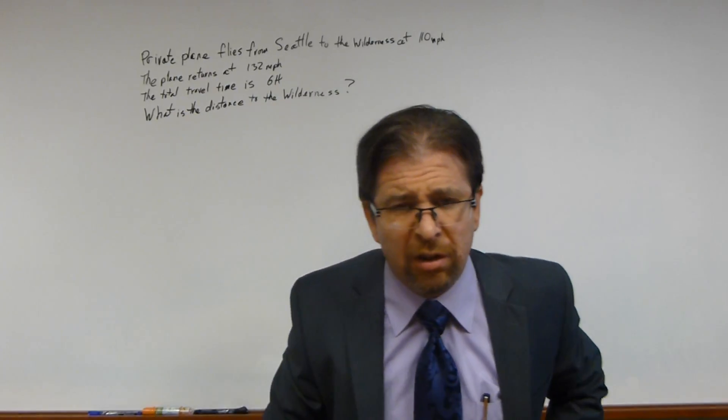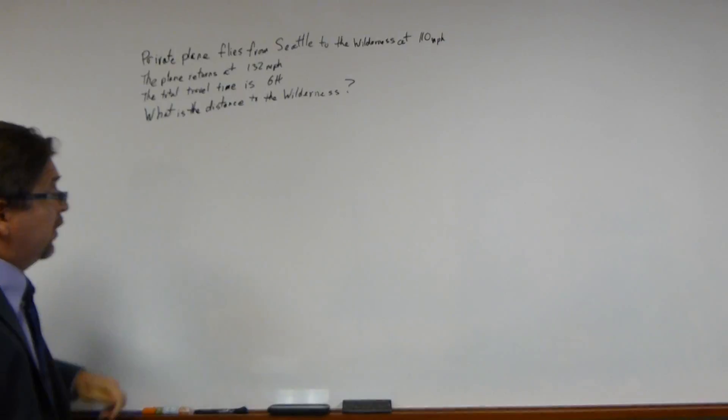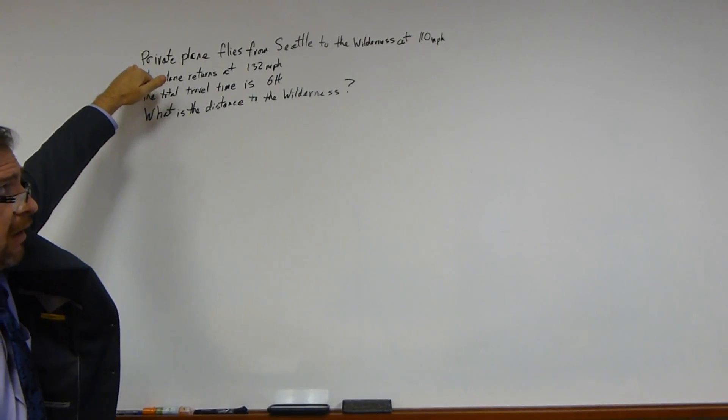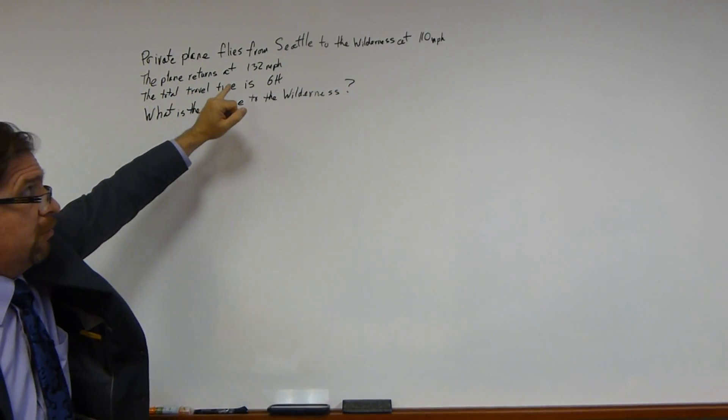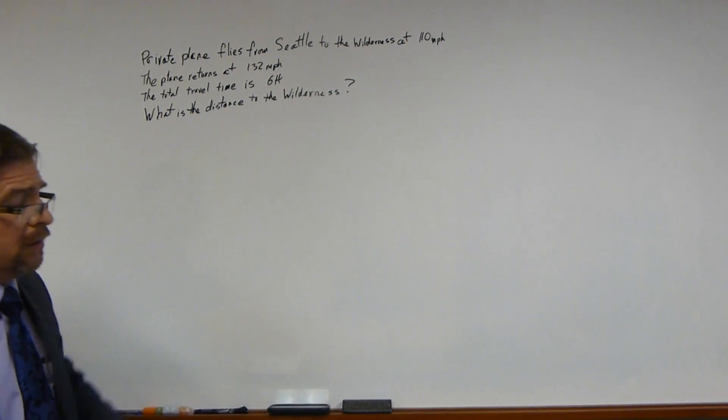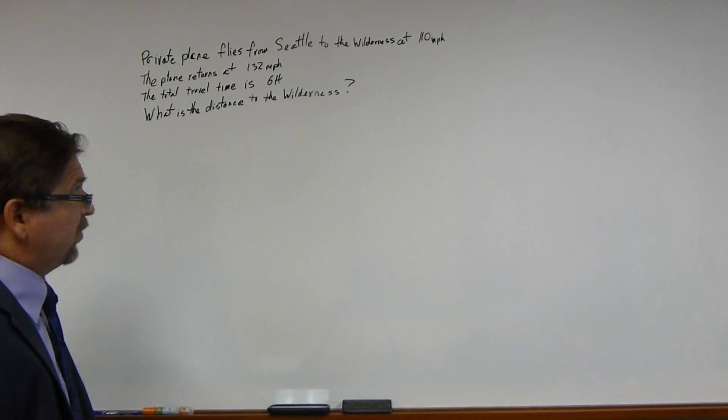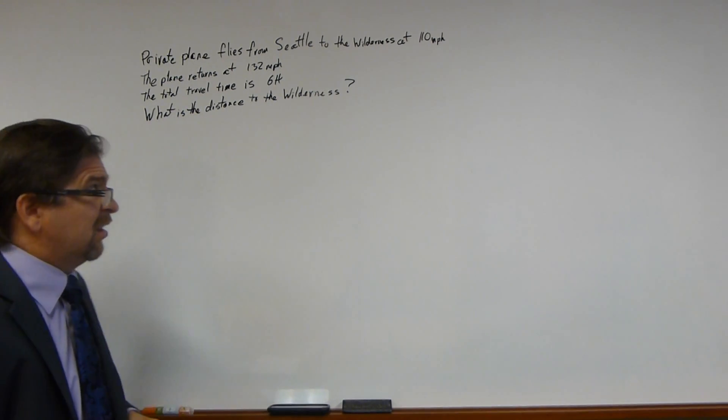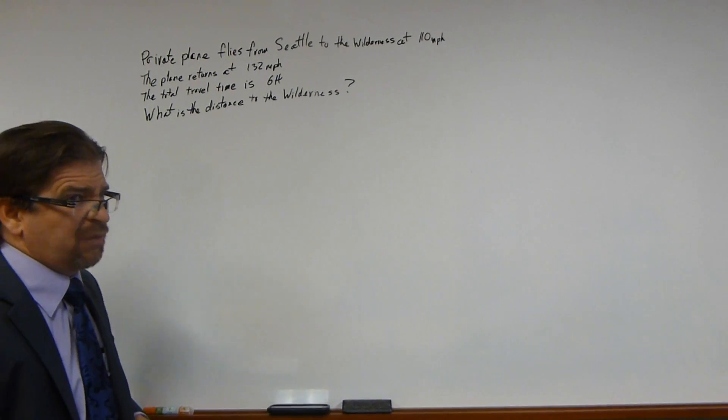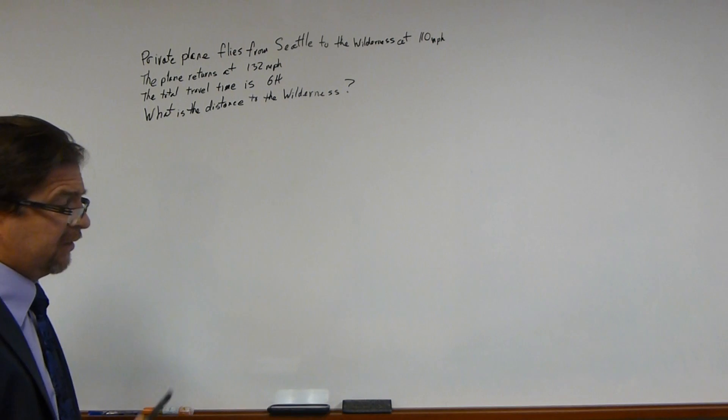In this problem, we're going to look at how to solve this. A private plane flies from Seattle to the wilderness at 110 miles per hour. The plane returns at 132 miles per hour. Total travel time is 6 hours. So the problem asks you, what's the distance to the wilderness? How do you solve that? You look at that and wonder, is there even enough information to solve it? Let's do it.